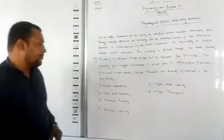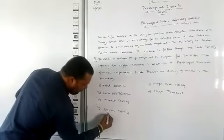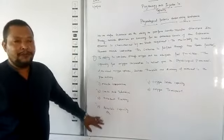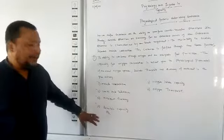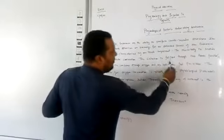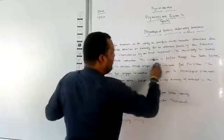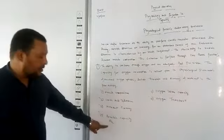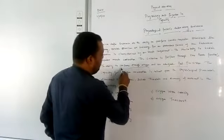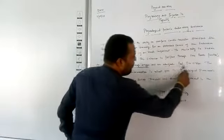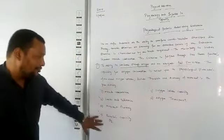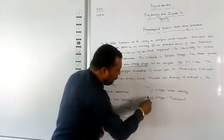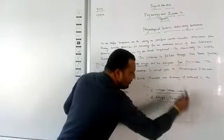Number four is aerobic capacity. Aerobic means in the presence of oxygen. In this environment, the maximum adequate supply of oxygen is given to the body. If the aerobic capacity of the body is adequate, then there is enough oxygen consumption and adequate fuel for muscle contraction. Aerobic capacity is based on two points: number one is oxygen intake capacity, and number two is oxygen transport.